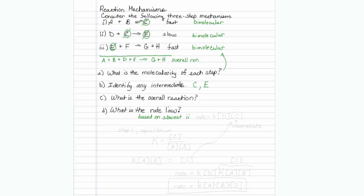So our rate has to equal k times D times C, but there's a problem with this. C is an intermediate. It's not allowed to be in a rate equation if it's an intermediate, so I have to get rid of that C somehow.